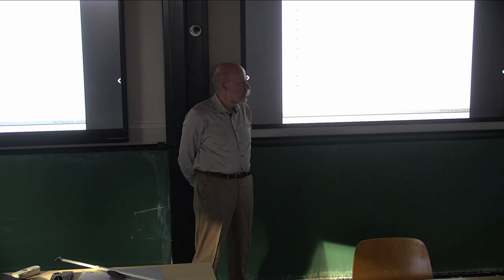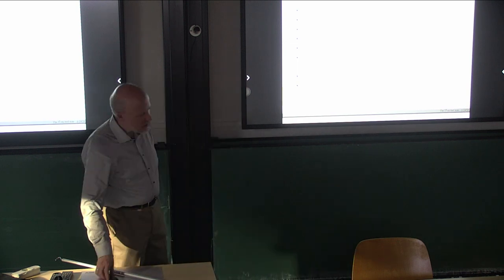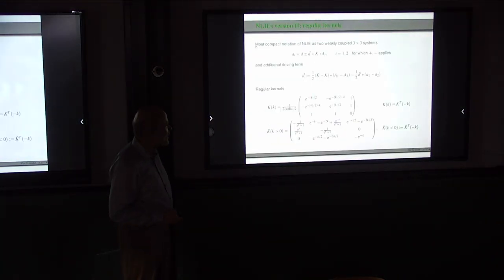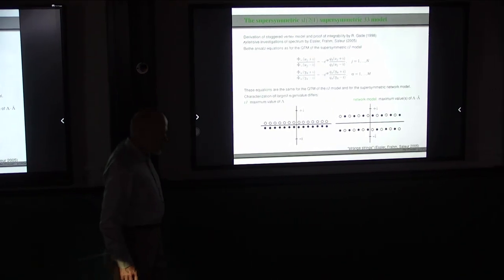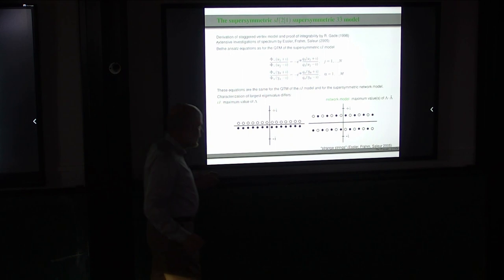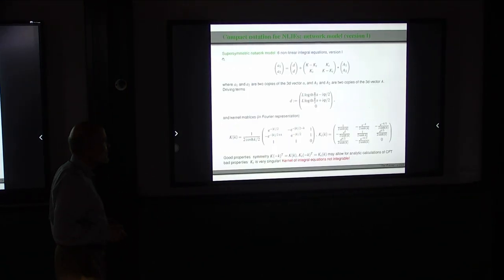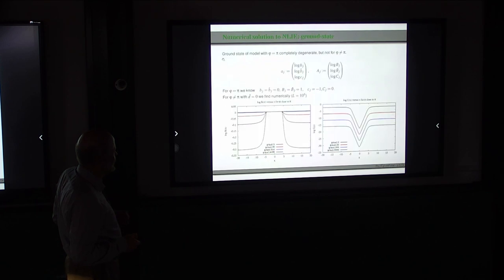A question about the SL(2|1) isotropic case: it has a very peculiar root configuration for the ground state where all roots collapse. The collapse occurs by having the twist angle φ different from π. I should have used it before. Here are results for φ different from but close to π — for φ = π the ground state shows logarithmic zeros appearing. I am happy to explain further if interested.